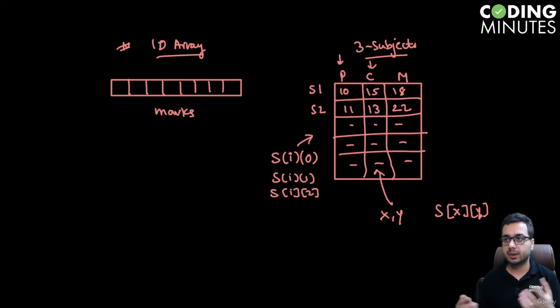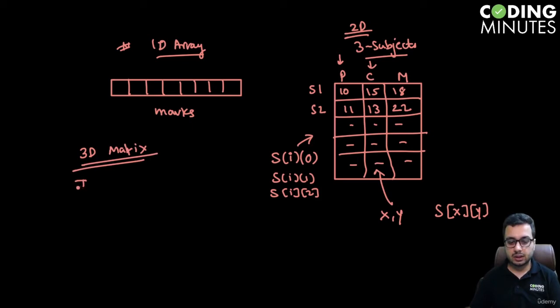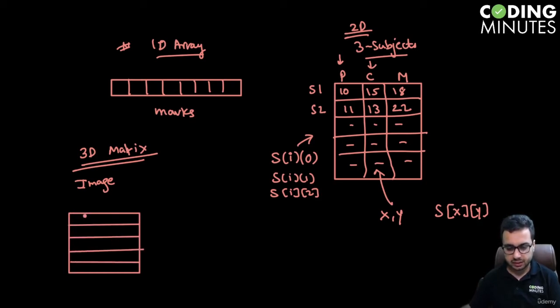Now let us also talk about 3D matrix. A very real-life use case would be images. All the images you see on your device are nothing but matrices of pixels. If you zoom into an image, you will find it's a grid. If it is a black and white image, it's a 2D matrix, but if it's a colored image, it's actually a 3D matrix.